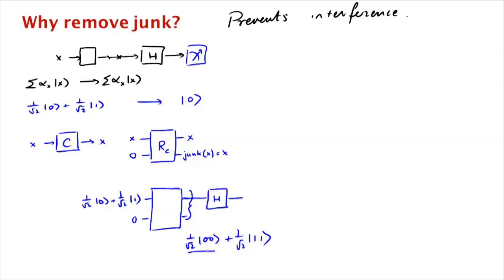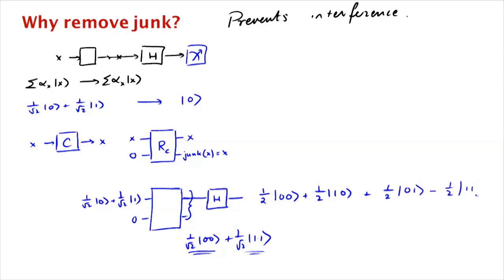Well, this part goes to 1/2 |00⟩ + 1/2 |10⟩ and this gets transformed to 1/2 |01⟩ + 1/2 |11⟩, so we get all four strings. When we measure the first qubit we see 0 and 1 with equal probability, which is different from what we had before.